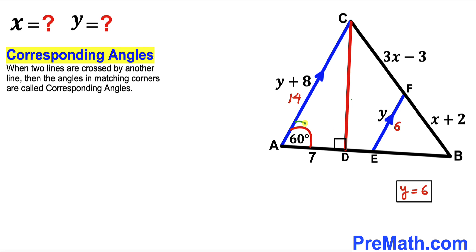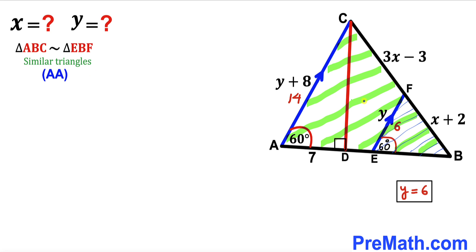For our next step, let's focus on the two parallel lines AC and EF. Angle CAD is congruent to angle FEB since they are corresponding angles. If angle CAD is 60 degrees, then angle FEB is also 60 degrees. Therefore, triangle ABC is similar to triangle EBF by the Angle-Angle similarity theorem, since these are corresponding angles and angle B is shared.